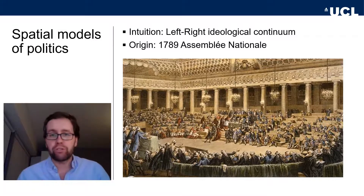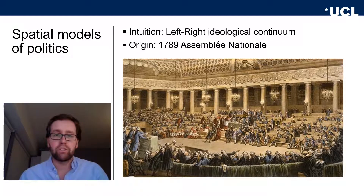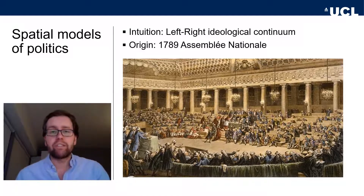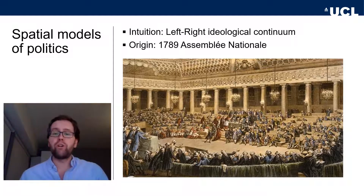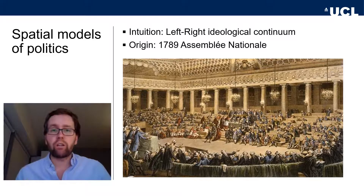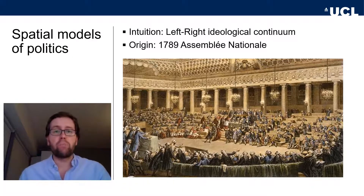We'll look at a couple of versions of spatial models today. The first is the median voter theorem, which says that whoever is located in the middle of the ideological space has a lot of power. We'll look at this for the case of smaller committees or legislatures such as the US Senate, and then see an application to the current US Senate. The second version concerns mass general elections and goes back to Anthony Downs' 1957 book, An Economic Theory of Democracy. Let's start with the simple committee version.